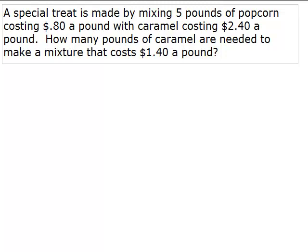All right, here's a word problem. A special treat is made by mixing 5 pounds of popcorn costing 80 cents a pound with caramel costing $2.40 a pound. How many pounds of caramel are needed to make a mixture that costs $1.40 a pound?